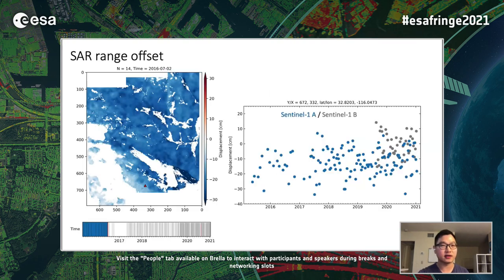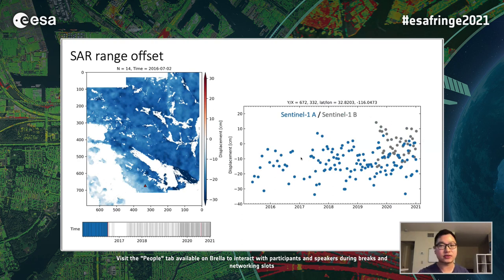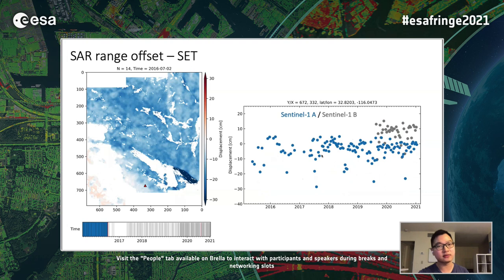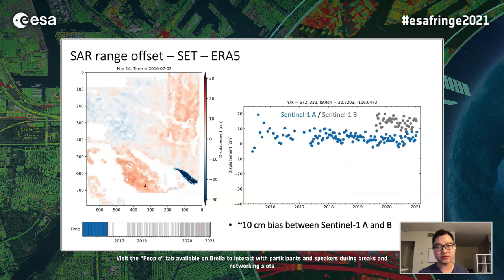After correcting for the solid Earth tide and troposphere, the displacement time series becomes progressively cleaner. The raw range offset is shown in map view, with the displacement time series of selected points on the right. We can see that after correcting for the solid Earth tide and then the troposphere, the signal becomes cleaner. We also identify a systematic bias of around 10 centimeters between the Sentinel-1A and 1B sensors.